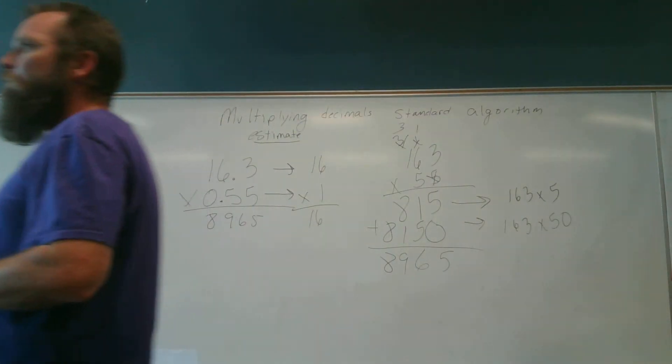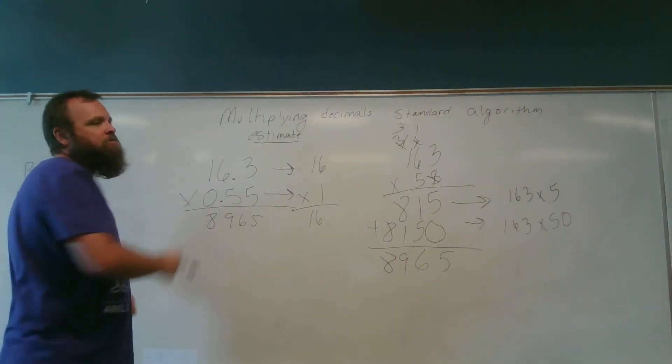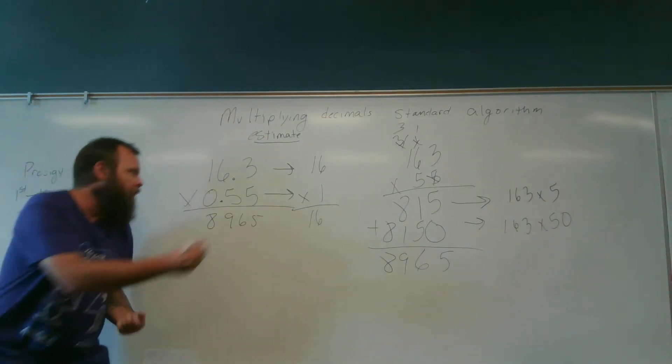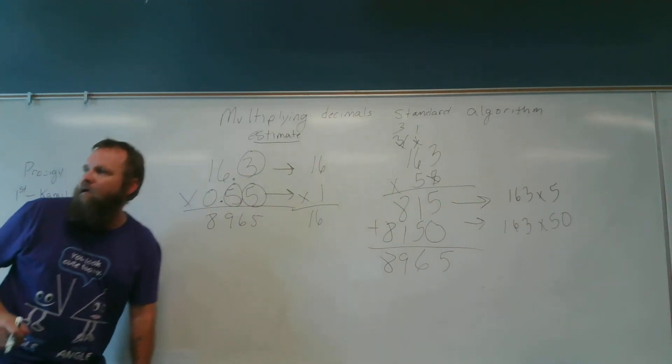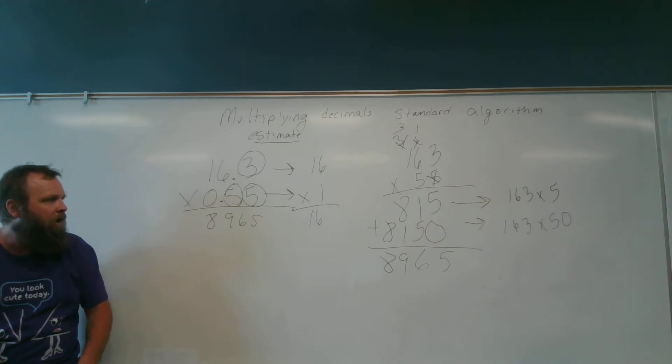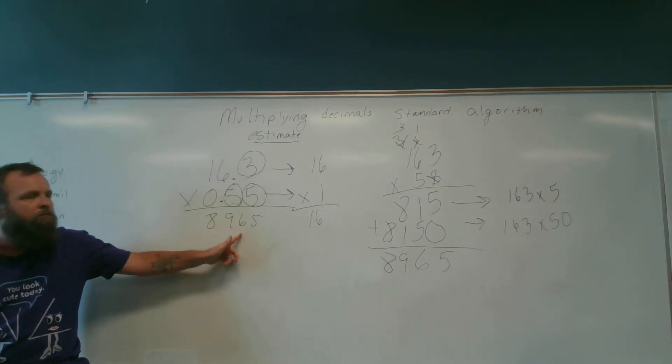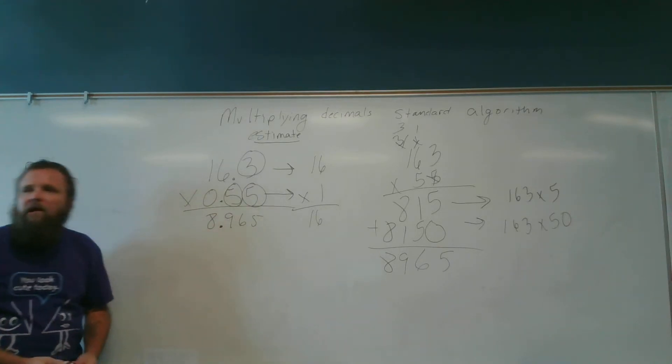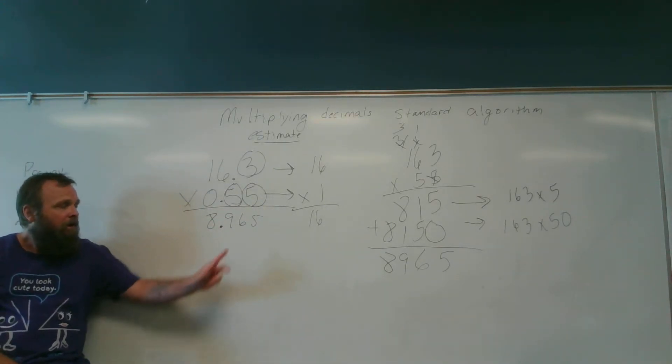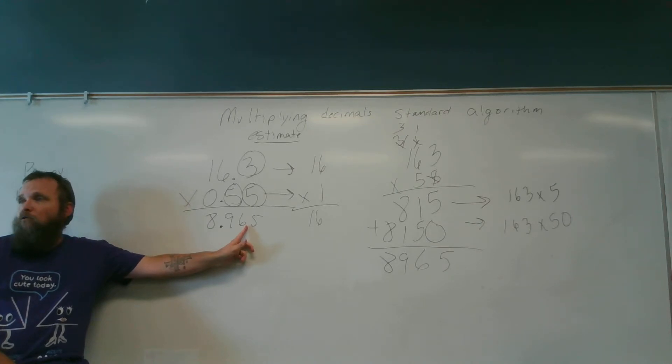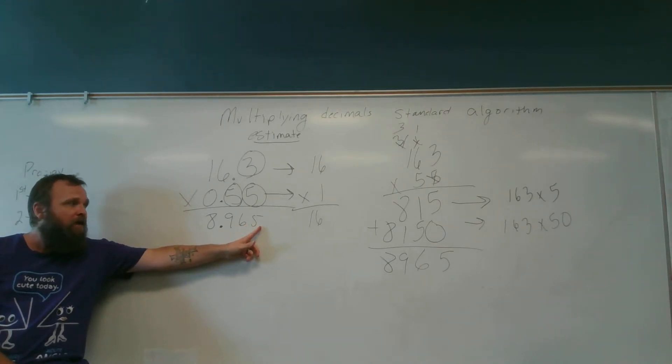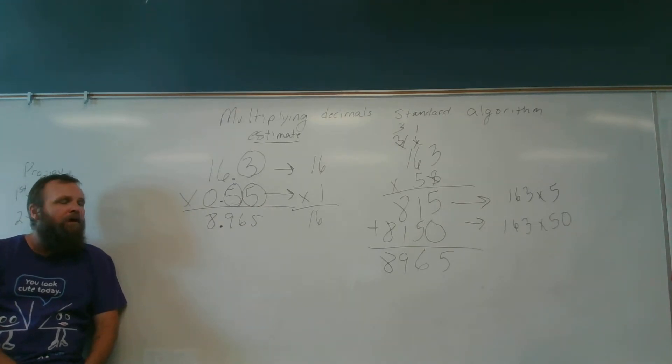So Jacob M., how many numbers are behind the decimal point in my problem? 3. This 3, this 5, and this 5. So there needs to be 3 behind it in my answer. So where's the decimal point in my product go? Between the 8 and the 9. Now that's as close to 16 as we can get. If I put it here it's 89, seems way crazy. If I put it here it's 896, way crazy. If I put it here it's 8,965, way crazy. So we don't want to do that.